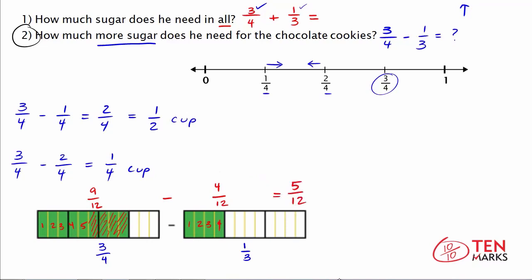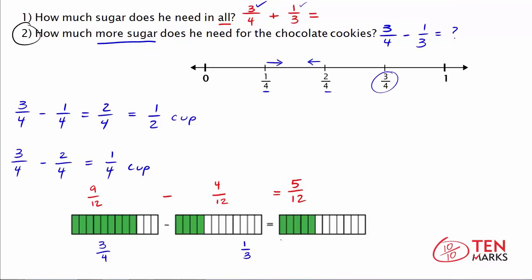Looking at the final model, there are 5 parts shaded in out of 12, confirming 5 twelfths. Note that 5 twelfths falls within our estimated range — 6 twelfths would be one half, which was our greatest estimate, and 5 twelfths is just below that. So we had a good idea where the answer would fall, and found the exact answer using the models. I hope this makes solving problems easier when you have to add and subtract unlike fractions. Thanks for watching!